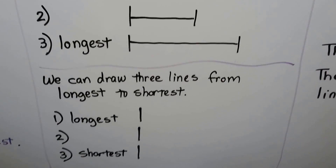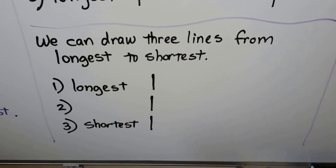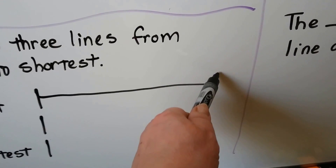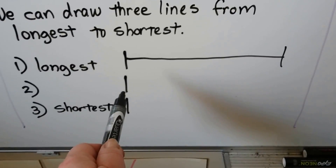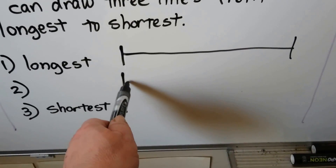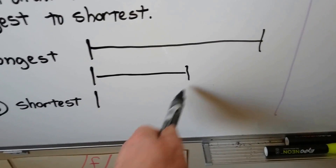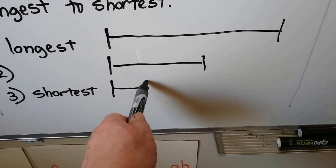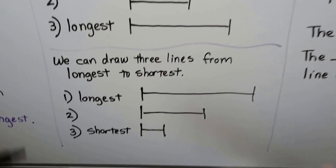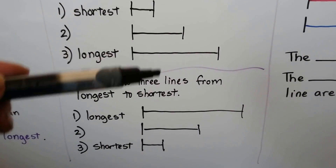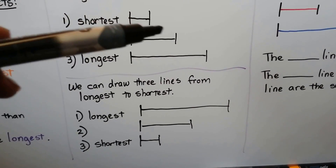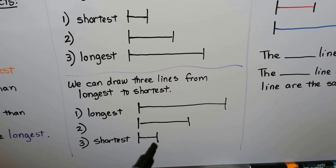We can draw three lines from longest to shortest. Now we start with the longest line, so we make a nice long line. Then we make a line that is in between the longest and shortest — a medium length. Then the shortest one is a little small one. Those are in order from longest to shortest. See how it slowly got bigger going one way, and on the other it slowly got smaller.